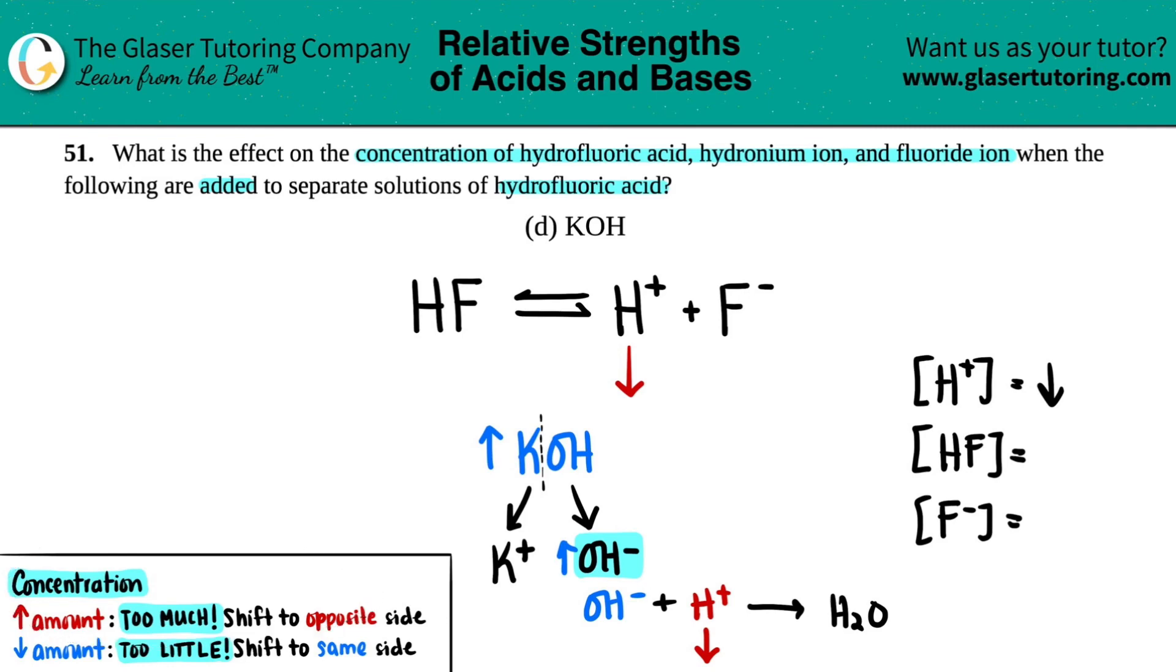Now, this is Le Chatelier's principle. If you lower the amount of something, just like we have here, we're decreasing H plus, you have too little. So you're going to shift to the same side. So if this is the side, the products is the drop, you're going to shift to that side.